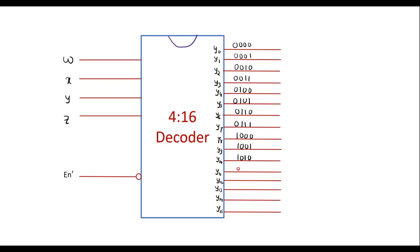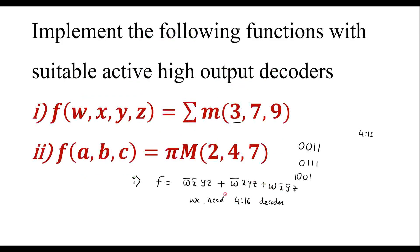Continuing the binary representations: Y10 is 1010, Y11 is 1011, Y12 is 1100, Y13 is 1101, Y14 is 1110, and Y15 is 1111. According to the function, we have minterms 3, 7, and 9, so we consider outputs Y3, Y7, and Y9.